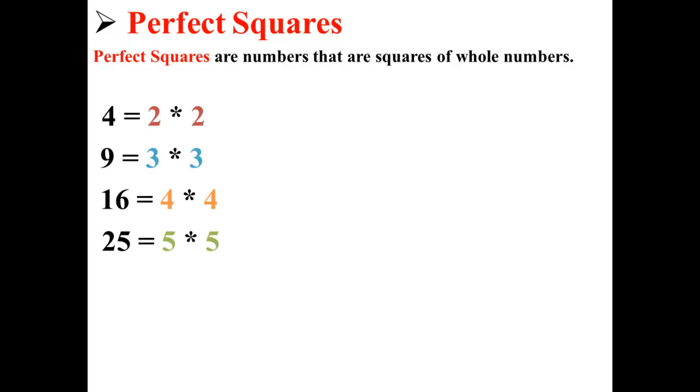They're perfect squares because 4 is 2 squared, 9 is 3 squared, 16 is 4 squared, and 25 is 5 squared.